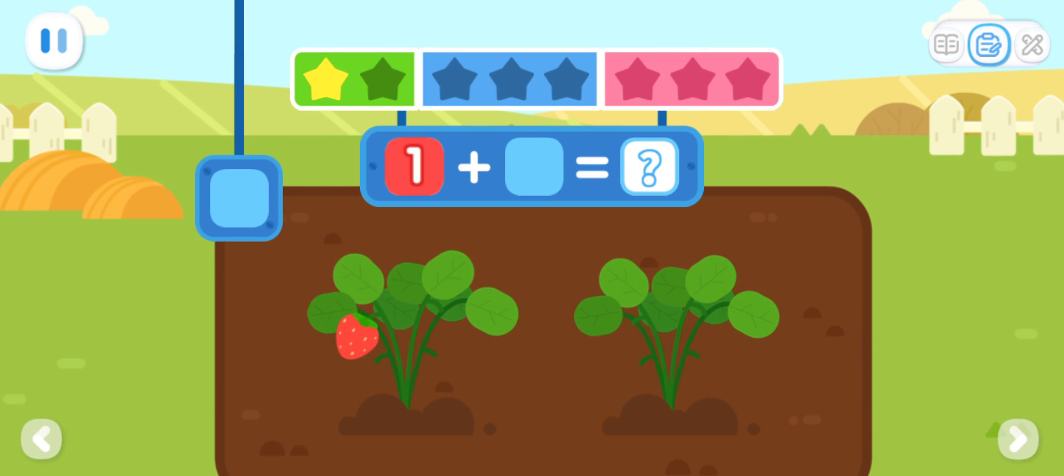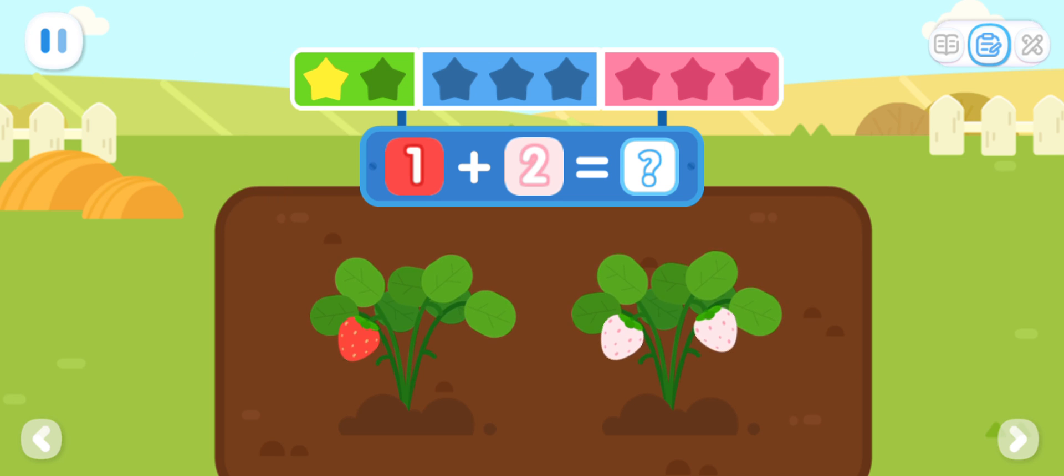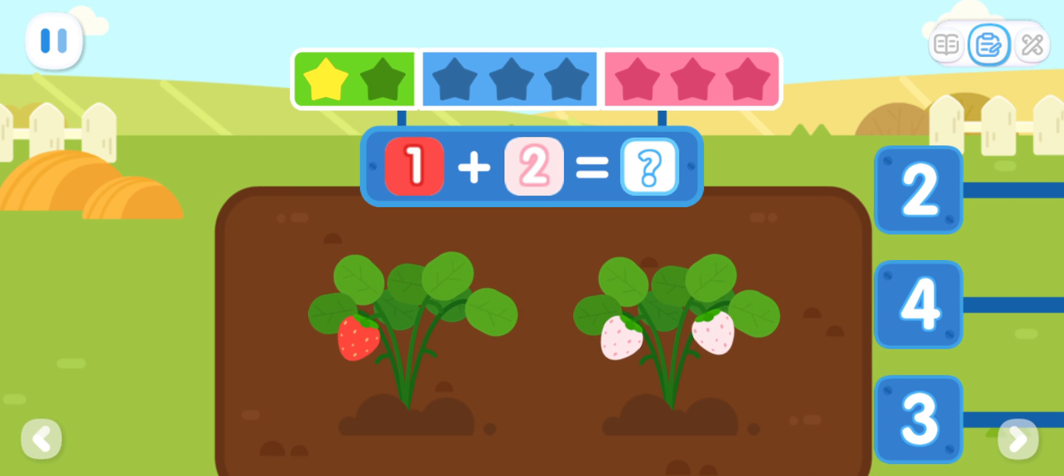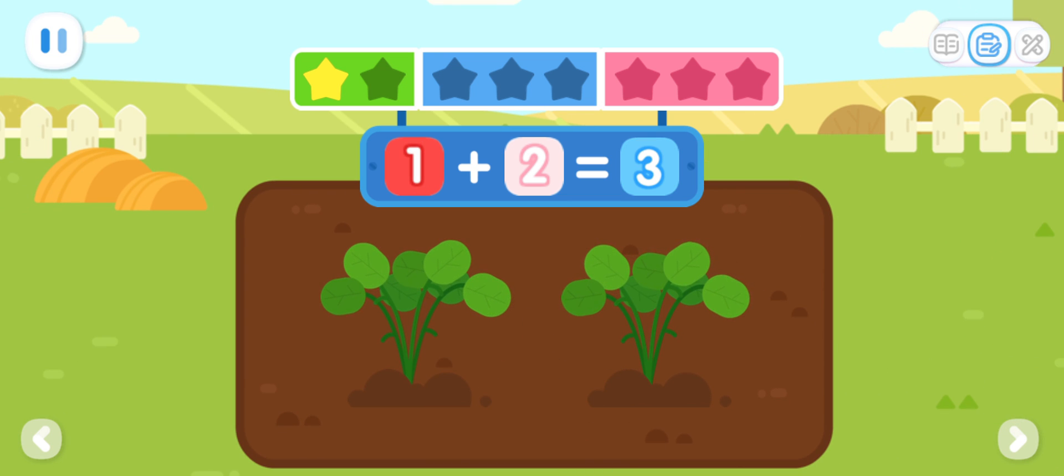There is one red strawberry. There are two white strawberries. How many strawberries are there in total? You've got it! One plus two equals three.